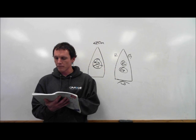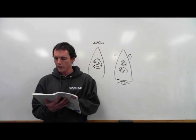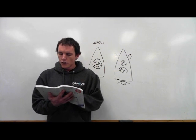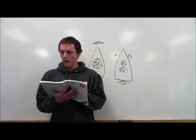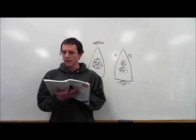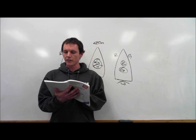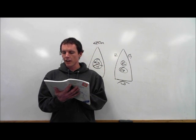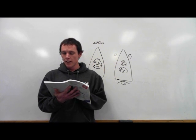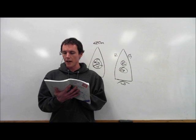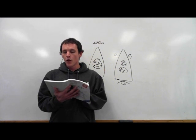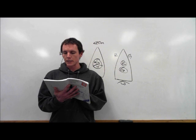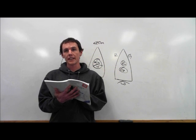A vessel when engaged in trawling, by which is meant the dragging through the water of a dredge net or other apparatus used as a fishing appliance, shall exhibit two all-around lights in a vertical line, the upper being green and the lower white, or a shape consisting of two cones with their apexes together in a vertical line, one above the other. A masthead light abaft and higher than the all-around green light. A vessel of less than 50 meters in length shall not be obliged to exhibit such a light but may do so. And when making way through the water, in addition to the lights prescribed in this paragraph, side lights and a stern light.